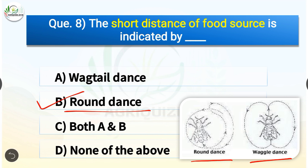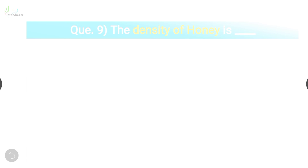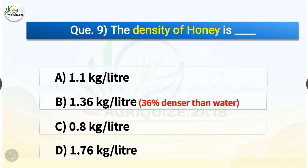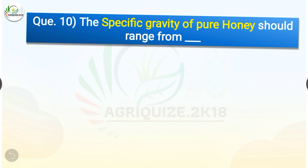Question number nine: The density of honey is which of the following? The options are: 1.1 kg/liter, 1.36 kg/liter, 0.8 kg/liter, or 1.76 kg/liter. The correct answer is option B — 1.36 kg/liter. The density of honey is 1.36 kg/liter, that is 36% denser than water.